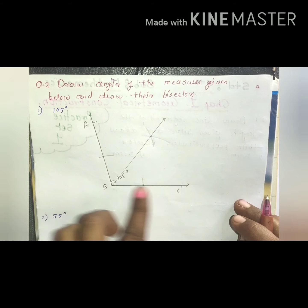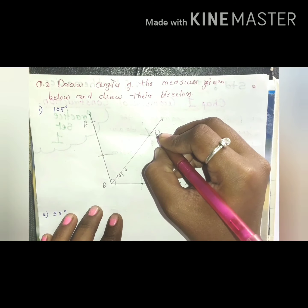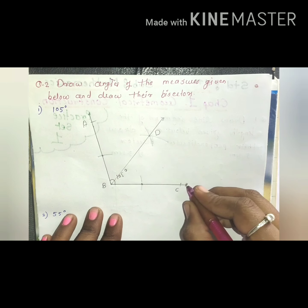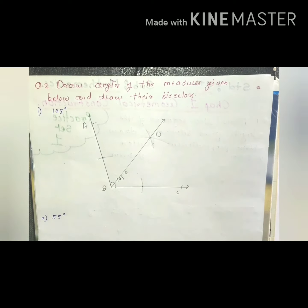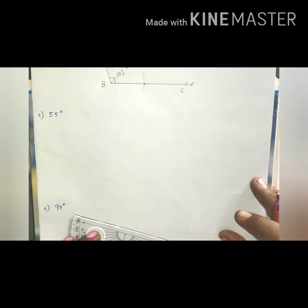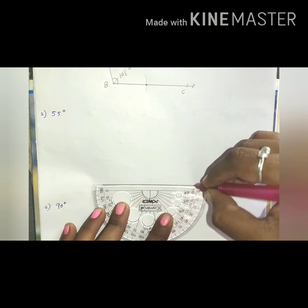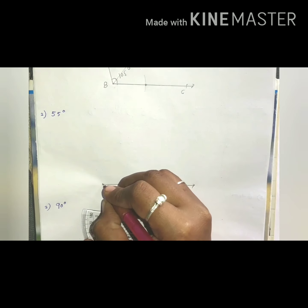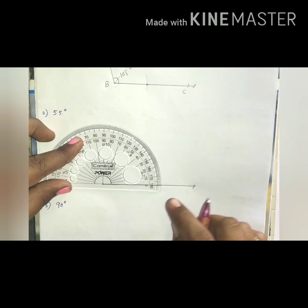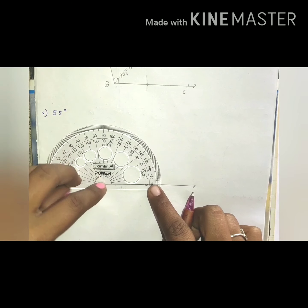Next, draw a line segment of 3.8 cm. Take more than half the distance and make arcs above and below the line, then with the same distance make arcs above and below again. We get two points of intersection — join these two points to get the perpendicular bisector of the 3.8 cm line segment.